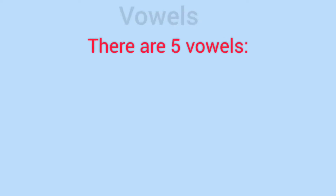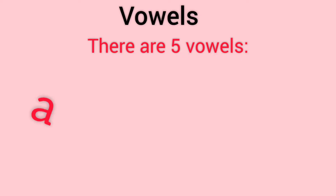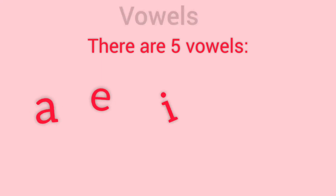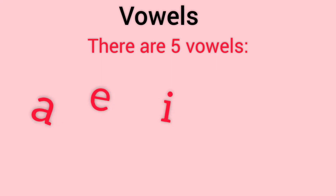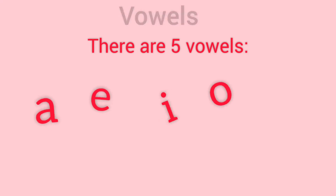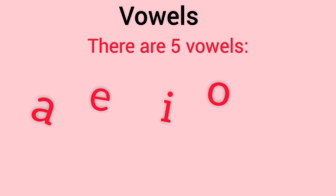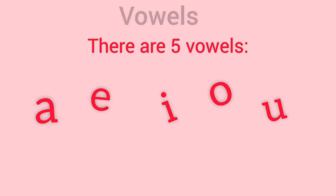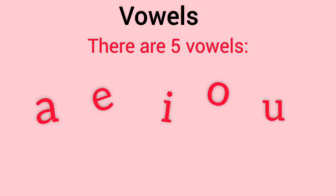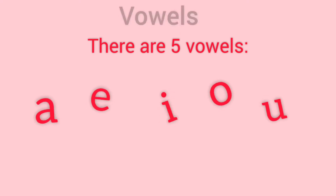Hello everyone. Today we are going to learn about vowels. There are five vowels in the English language: A, E, I, O, and U. Vowels have two sounds: short vowel sound and long vowel sound.